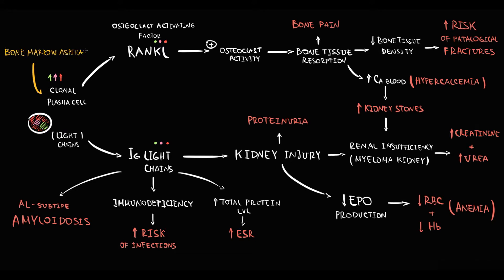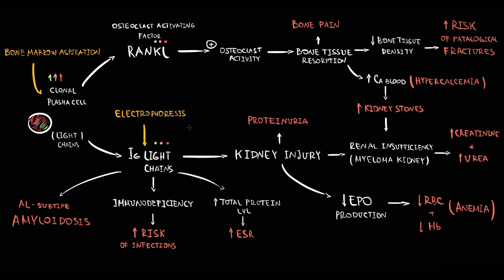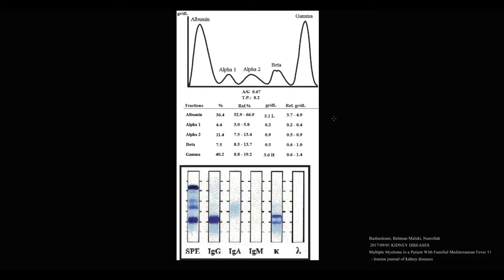We can also determine the amount of immunoglobulins that plasma cells produce by electrophoresis. On electrophoresis, we have albumin band, alpha-1, alpha-2, beta, and gamma band. The gamma band represents immunoglobulins.